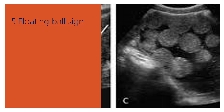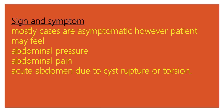Number five, the floating ball sign is another pathognomonic feature of dermoid cysts. Most cases are asymptomatic; however, the patient may feel abdominal pressure, abdominal pain, or acute abdomen due to cyst rupture or torsion.